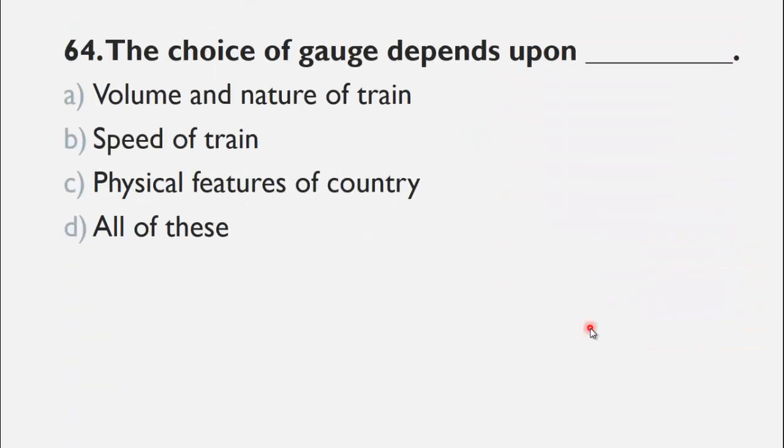MCQ number 64 is: The choice of gauge depends upon ___. A) volume and nature of the train, B) speed of the train, C) physical feature of the country, and D) all of these. The choice of gauge depends upon all of the following factors, so the right choice for this question is D, all of these.